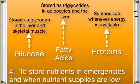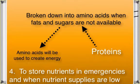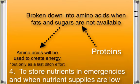Proteins are synthesized whenever energy is available. However, when glucose or fatty acids are unavailable, proteins will be broken down into amino acids and the amino acids will be catabolized to create energy. So the primary function of proteins is not as an energy source, but they can be used to create energy as a last-ditch effort if fats and sugars are not available.